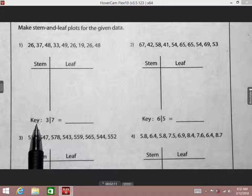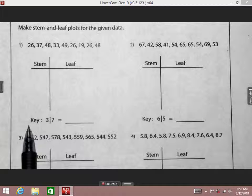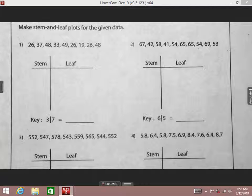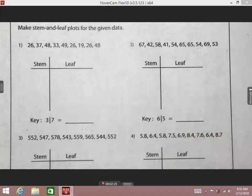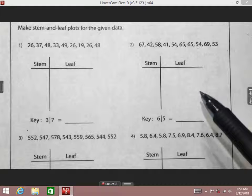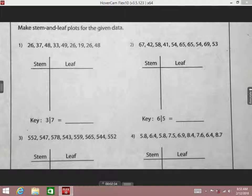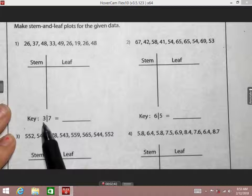So today our goal is a stem-and-leaf plot. Learning target says I can create a stem-and-leaf plot. So we're going to reword this. I can create and use a stem-and-leaf plot. If you'll notice down here at the bottom on number one, what does that say? A key. Where else do you all see keys used when it comes to information?